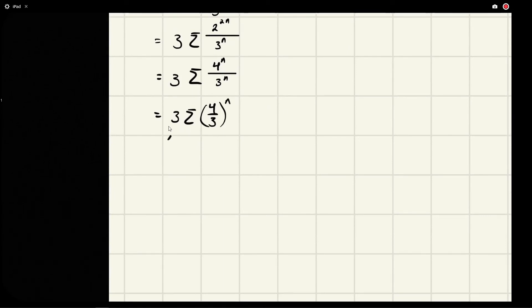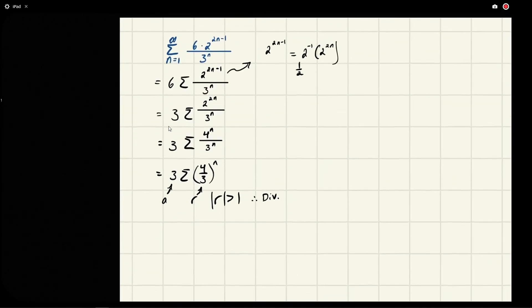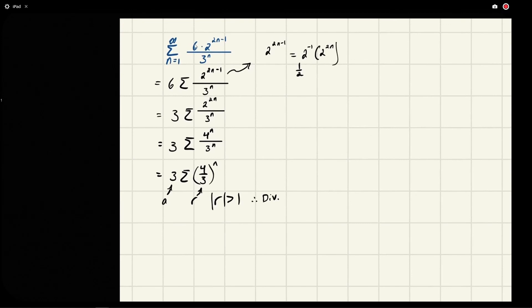Because we've got a three here—this is our a, this is our r—and we notice that the absolute value of r is greater than one. So we say, well, this is not good; this means it diverges. That's it. The trickiest part about this one is exercising the algebraic manipulation and getting to this r value.